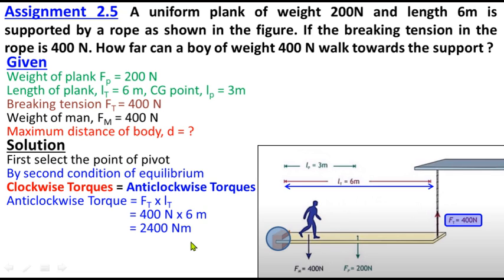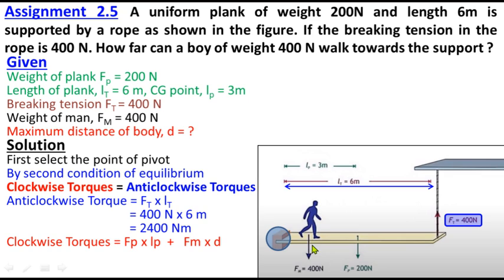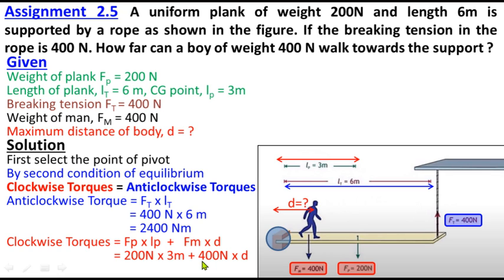Now the clockwise torques: there are two — one is Fp multiplied by Lp, which is 200 multiplied by 3 meter, and the other is Fm multiplied by D, which is 400 multiplied by D.